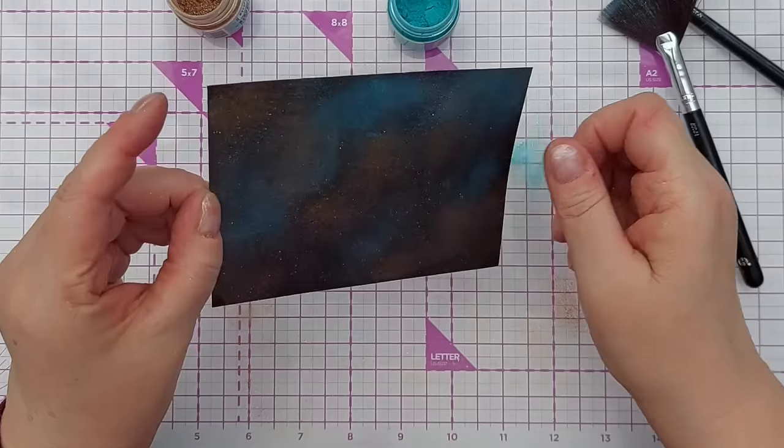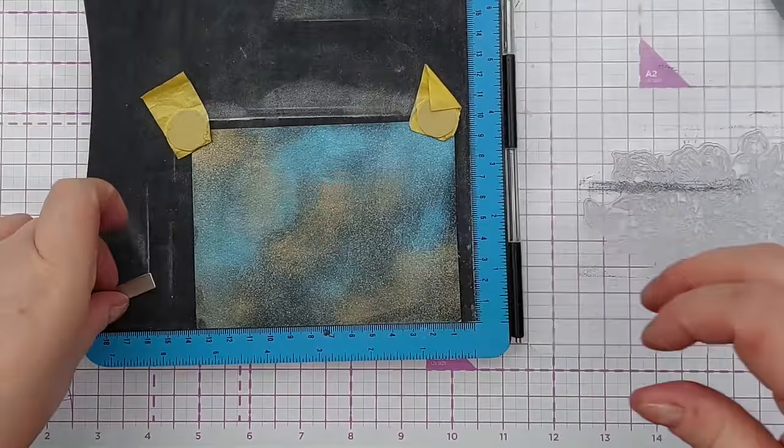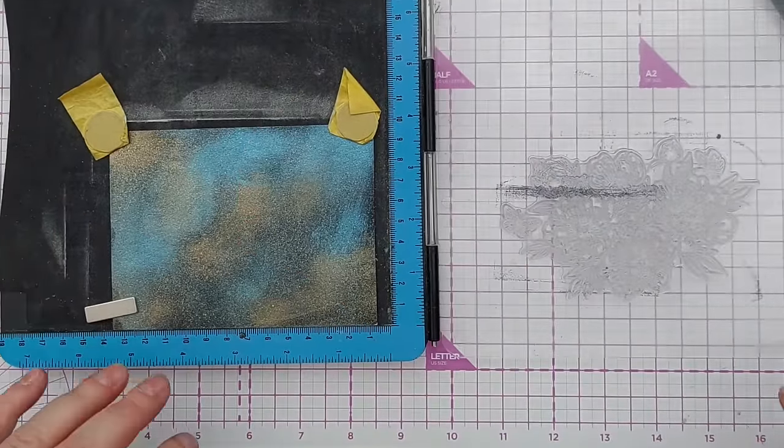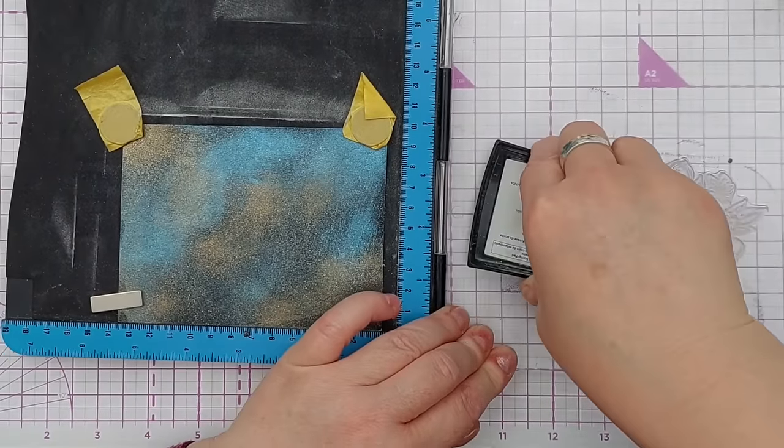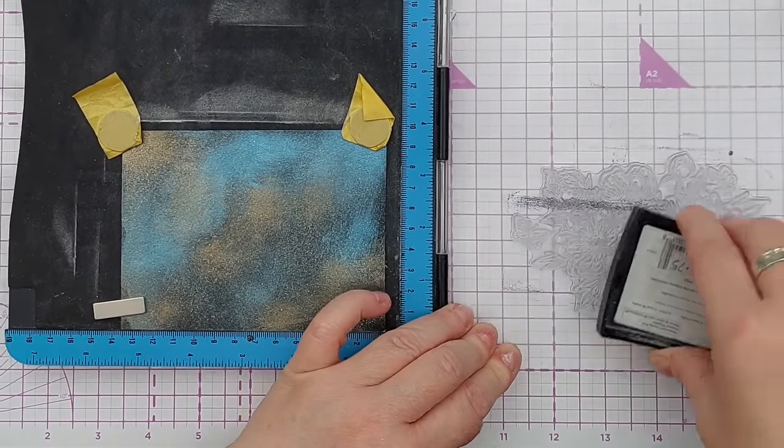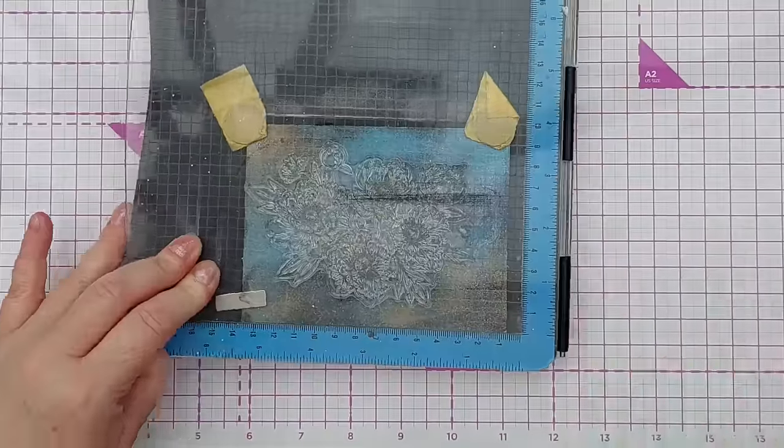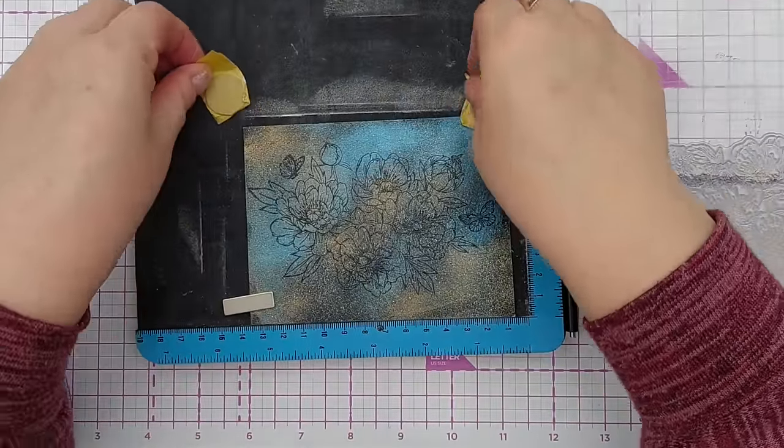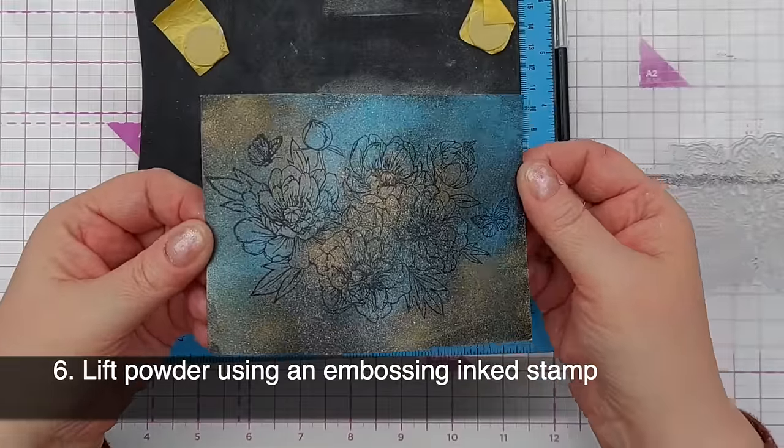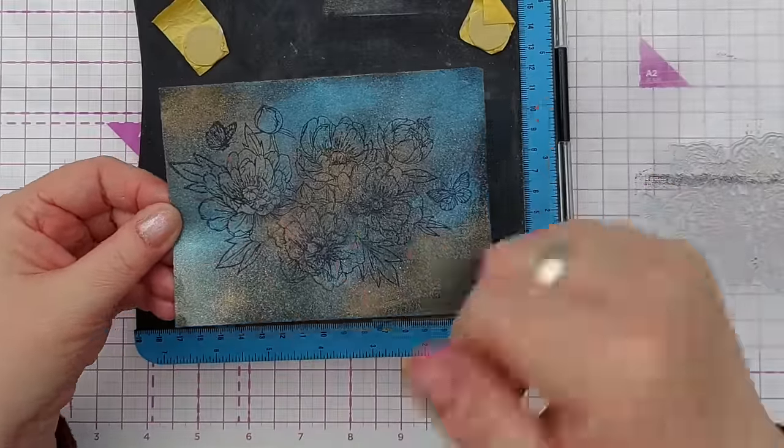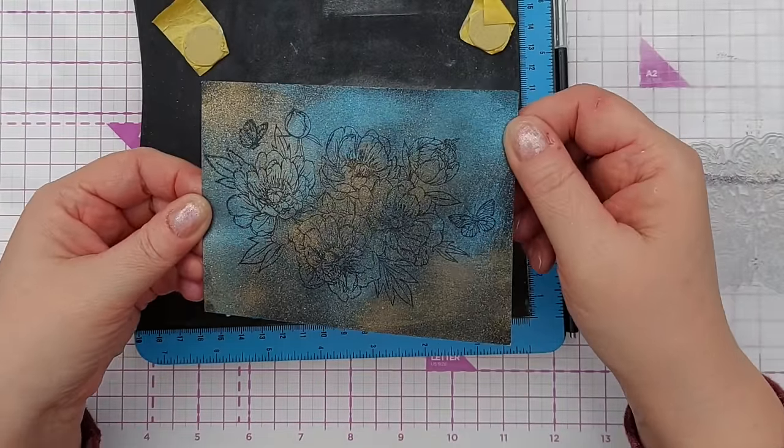I haven't done a particularly elegant job of spreading those around, but it will do. Now what I'm going to do is just pop this in here and I'm gonna get my stamp inked up again in embossing ink. And then, oh I hope you can see that. The ink on the stamp has picked up the pigment powder that's on the paper and left a black image in amongst all that pretty Luscious Powder.